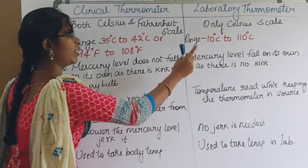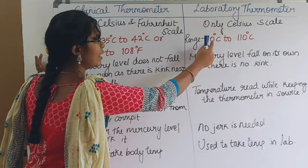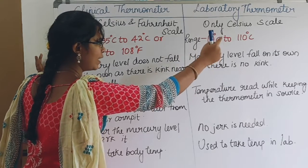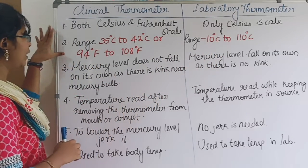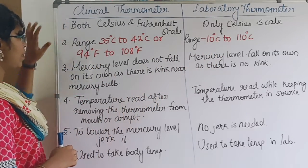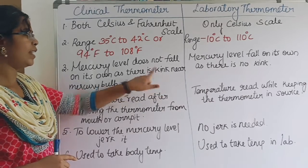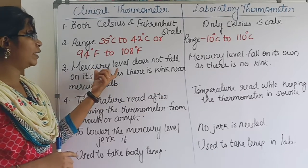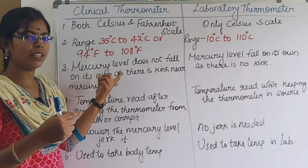In the laboratory thermometer, the Celsius scale ranges from minus 10 degrees centigrade to 110 degrees centigrade. In the clinical thermometer, there is a kink near the mercury bulb. Once the temperature falls, the mercury level falls, and the kink prevents it from falling further.